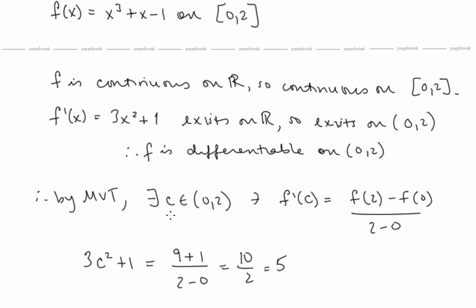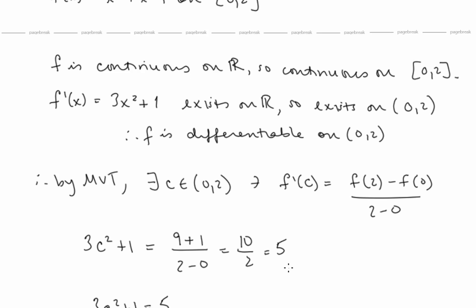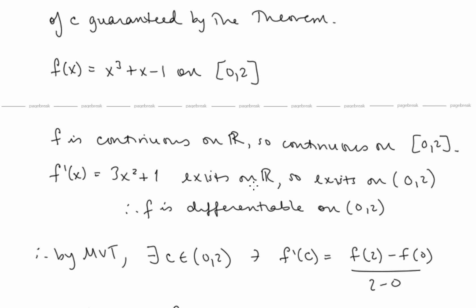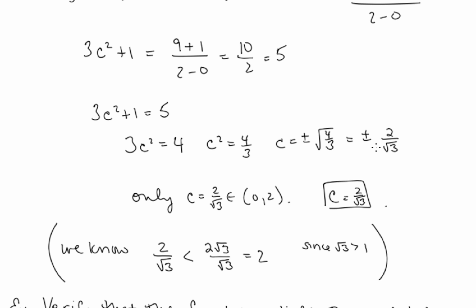The Mean Value Theorem is saying there exists a c in this interval for which 3c² + 1 equals 5. Let's solve for c: subtract 1 from both sides, divide by 3, and we have c equals positive or negative √(4/3), or positive or negative 2/√3. Remember we're asked to find c values in the interval [0, 2], so only one of these c values is in that interval: the positive 2/√3.